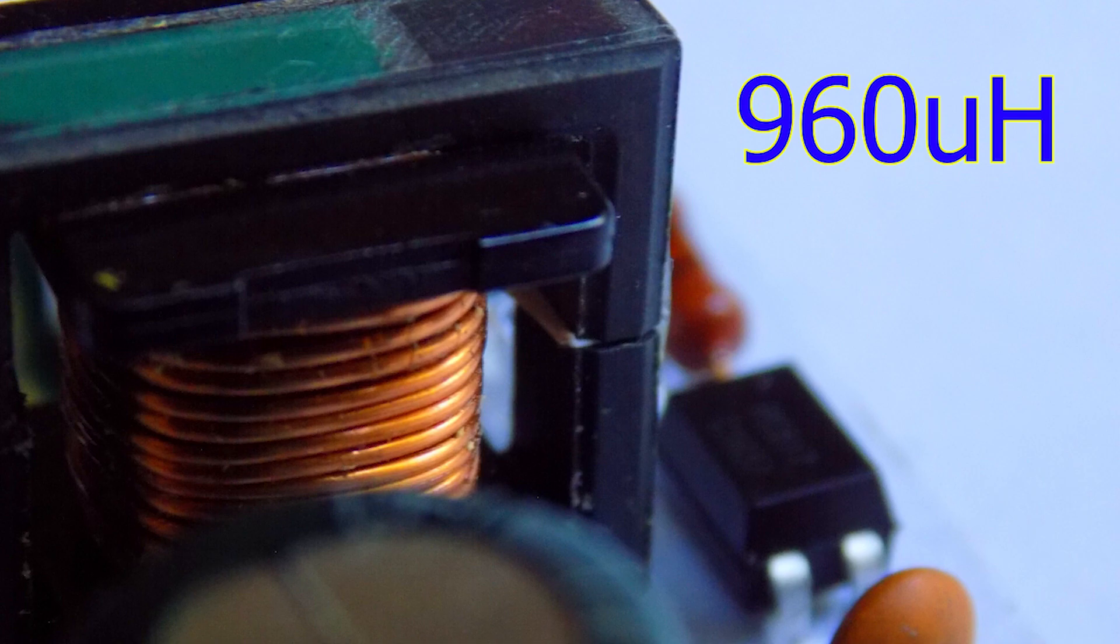I did not grind the middle leg of the core to obtain the necessary clearance. Instead, I took two identical halves. I took two pieces of a four-size paper and put between the halves. The inductance turned out to be about 960μH.